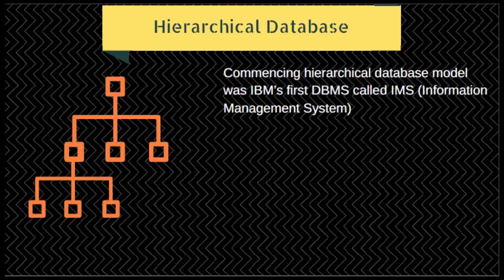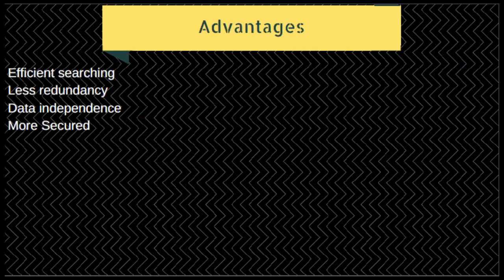Next is the hierarchical database. In the mid-1960s, Rockwell collaborated with IBM to create the Information Management System (IMS). In this model, files are related in a parent-child manner, with each file having at most one parent file. Advantages include efficient searching, less redundant data, data independence, and database security and integrity.